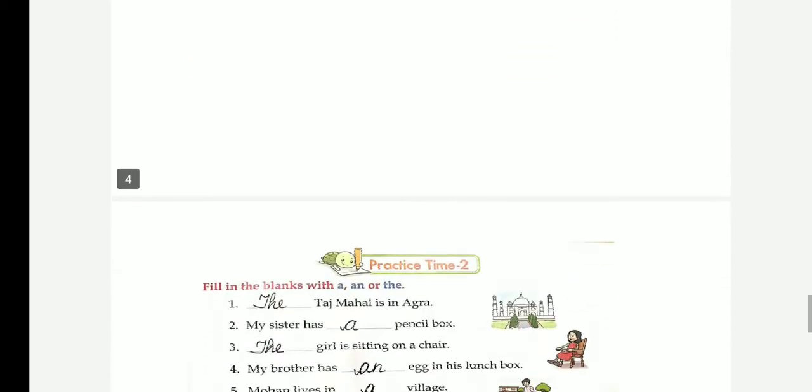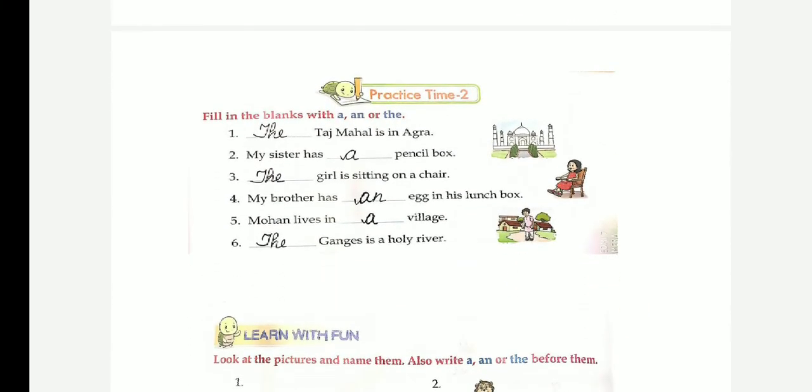Okay, next exercise. Fill in the blanks with 'a', 'an', or 'the'. First one, dash Taj Mahal is in Agra. The Taj Mahal is in Agra. We use 'the' before the names of famous buildings, then holy books, then mountains and rivers, and only one thing is of its kind. For example, the sun, the earth, the Red Fort, the Taj Mahal, the Ganges, the Everest, the Gita, the Bible, the Quran, etc.